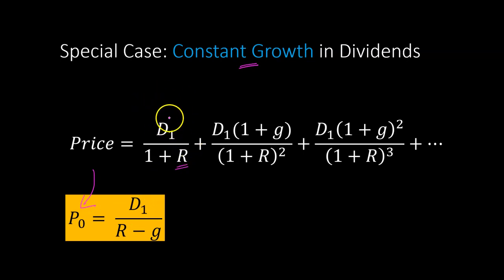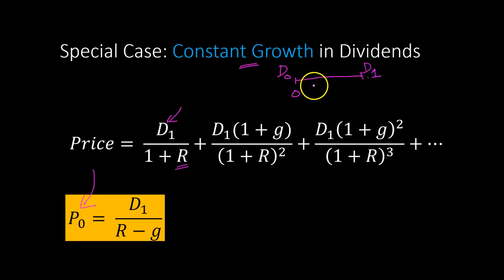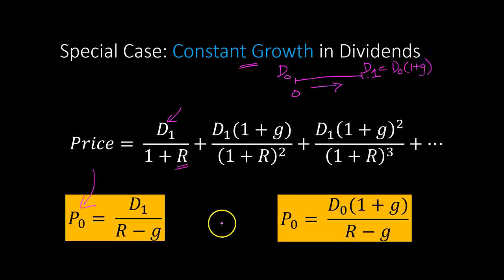It sometimes happens that D1 is expected to be G percent higher than the dividend just received today, D0. So if you just received D0 and dividends are growing at a constant rate, then D1 equals D0 times (1 + G). Another way of writing the same formula is P0 equals D0 times (1 + G) divided by (R minus G) — don't be confused, since D0 times (1 + G) is simply D1.